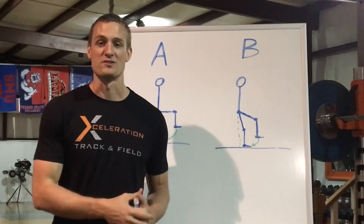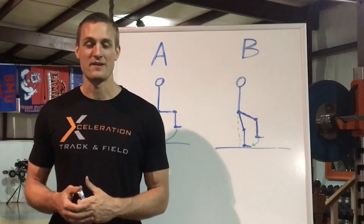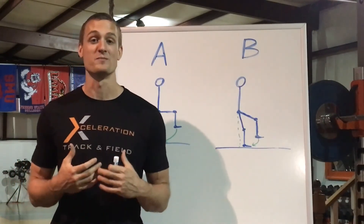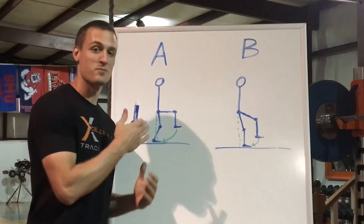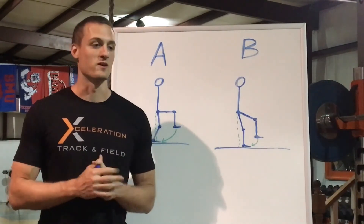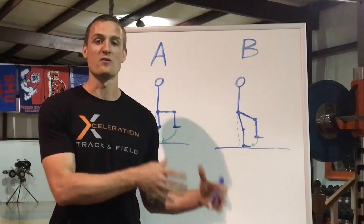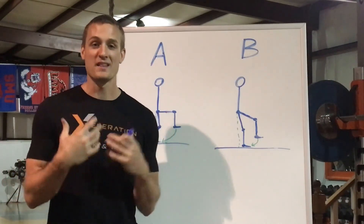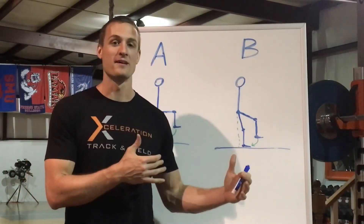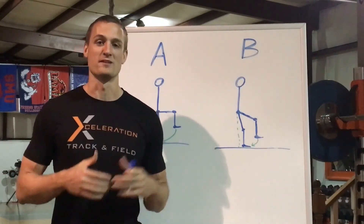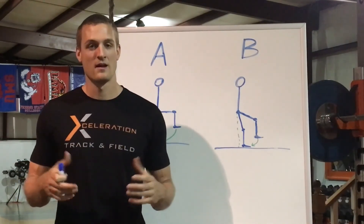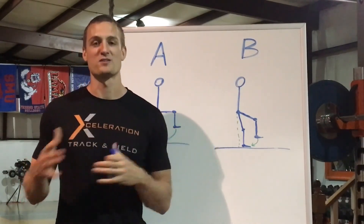Instead of relying on correlations, what you want to do is understand your subject matter. If you understand the physics of sprinting, you can make sense of all the data. I'm yet to find any research that confuses me or disagrees with the simple physics I've been putting in these videos. For example, someone once pointed out a study where there was a stronger correlation between horizontal force and top speed than between vertical force and top speed. Because I understand the physics of sprinting, I can understand how that would happen and not be misled into thinking that horizontal force determines top speed — because the physics say otherwise. Correlations can be wrong.